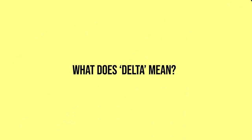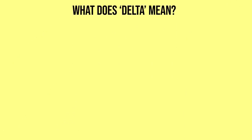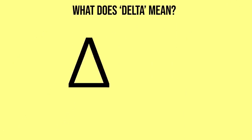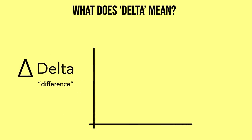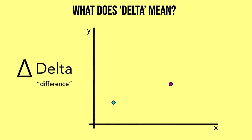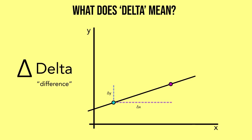What does delta mean? Delta is a mathematics term. Basically we just use the Greek alphabet equivalent of D — delta — seen here in its glorious triangular capital form, when we're talking about the differences, or changes, between two things. So you might have two points on a graph and to compare them and make calculations you might talk about the delta in the x direction and the delta in the y direction. Then you can do things like draw a line and work out its gradient.